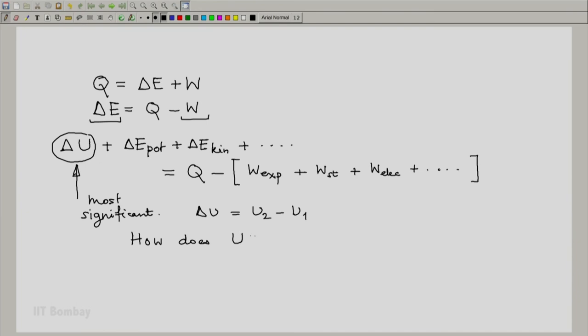How does U depend on other properties of the system? Unless we relate U to other properties of the system, the concept of U is not very useful.